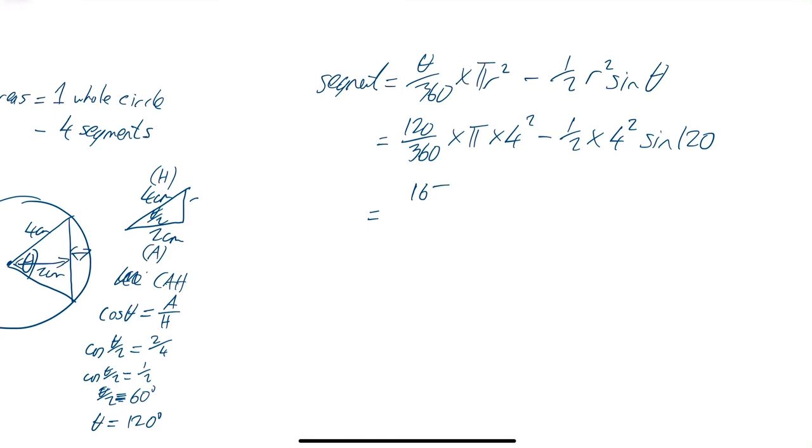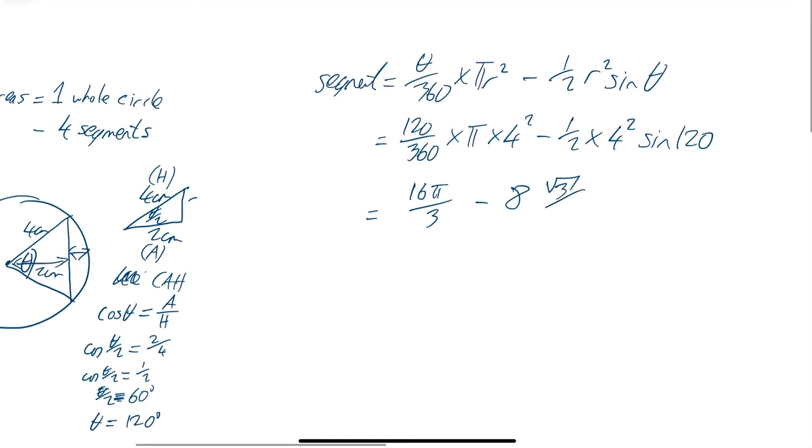And then we can go on from here and work that out. That's going to be 16 pi over 3. And then over here, 1/2 times 4 squared is 1/2 times 16, which is going to be 8. And sine of 120 is the same as sine of 60. And sine of 60 is root 3 over 2. And then we'll go on from here. That's 16 pi over 3 minus 4 root 3.